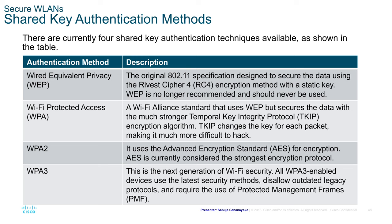Wi-Fi Protected Access: there are three types — WPA, WPA2, and WPA3. Developed by the Wi-Fi Alliance, these standards secure data with a much stronger Temporal Key Integrity Protocol, or TKIP, encryption algorithm.